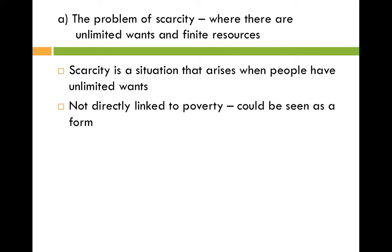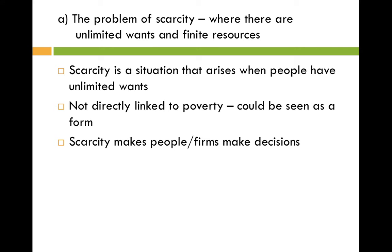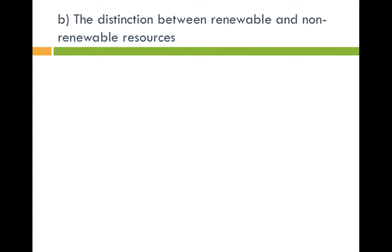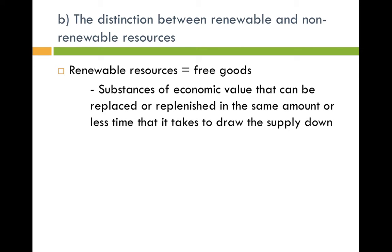So the basic necessities of life are scarce. One of the key issues that arises from the existence of scarcity is that it forces firms and people to make choices and decisions. Renewable resources are called free goods — they're not scarce, and they're substances of economic value that can be replaced or replenished in the same amount or even less time than it takes to draw the supply down. As a consumer uses up the good, a producer can produce more of it.